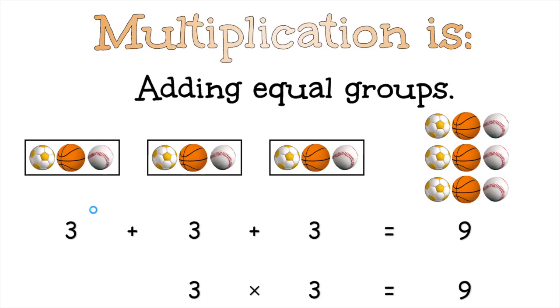Now what that can be translated into is three times three is nine. And how that is translated is that it is three times a group of three to equal nine.